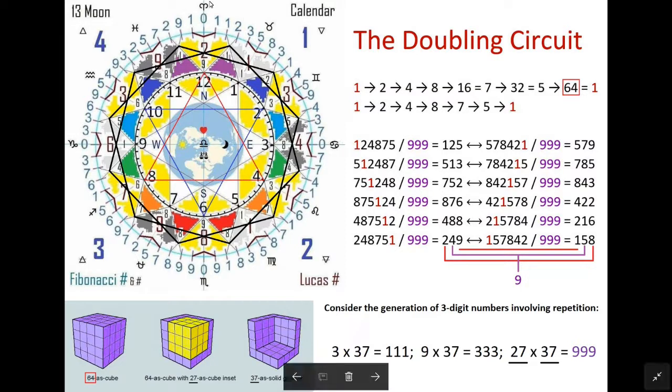The Fibonacci sequence is very easy. It starts at one, one, and then you just add the last two together. So the next one is two, two and one is three, two and three is five, etc.